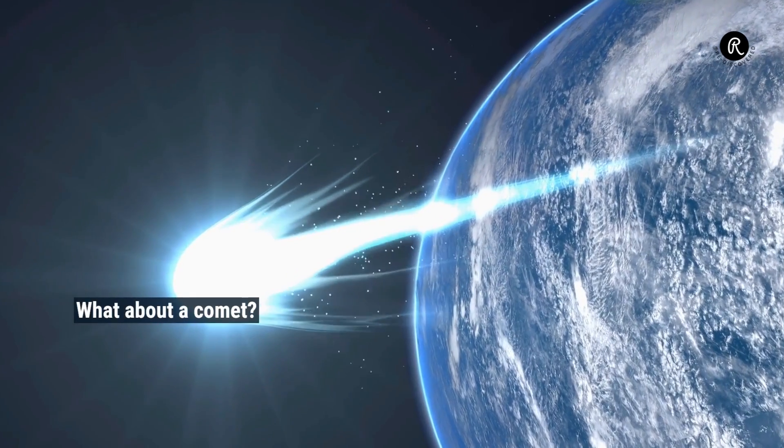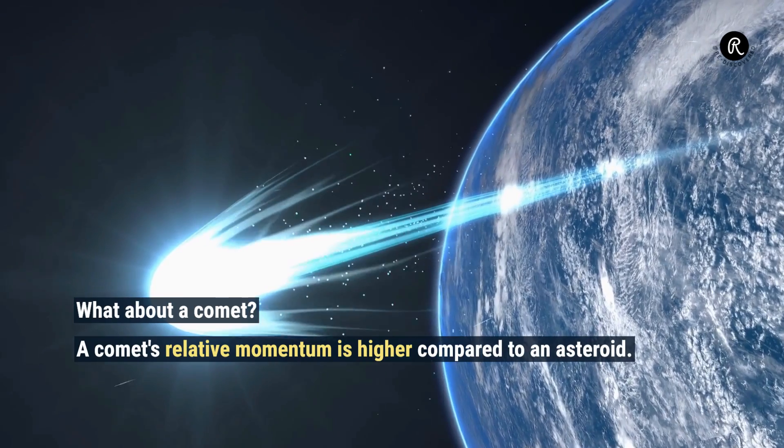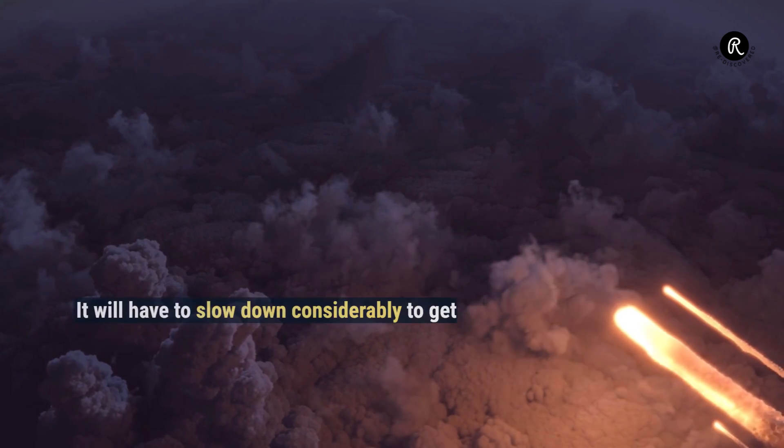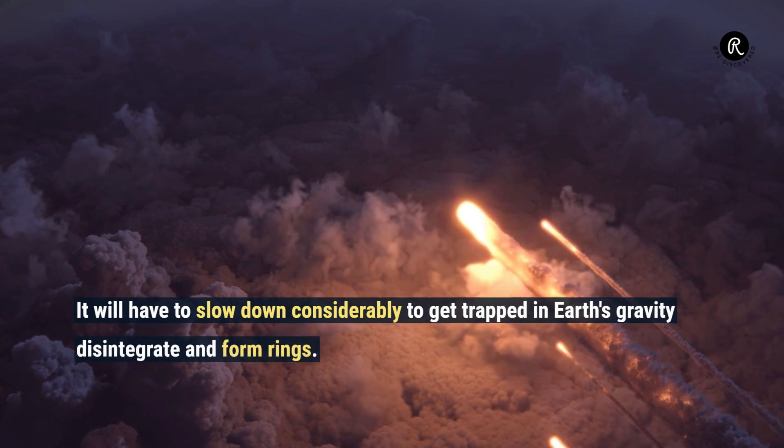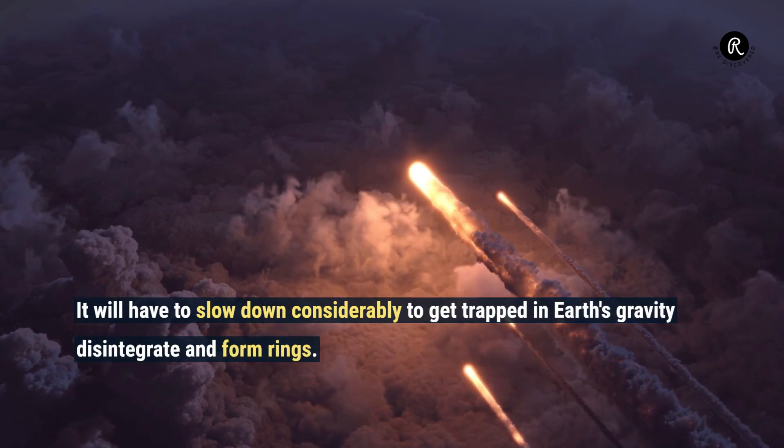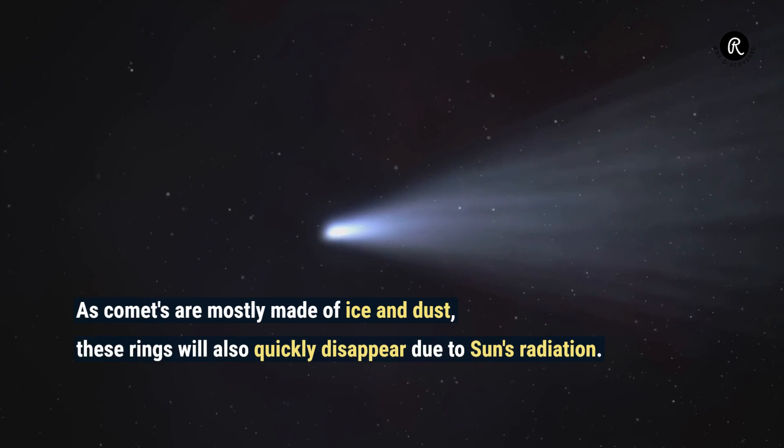What about a comet? A comet's relative momentum is higher compared to an asteroid. It will have to slow down considerably to get trapped in Earth's gravity, disintegrate, and form rings. As comets are mostly made of ice and dust, these rings will also quickly disappear due to the Sun's radiation.